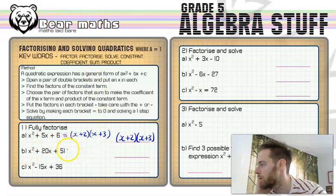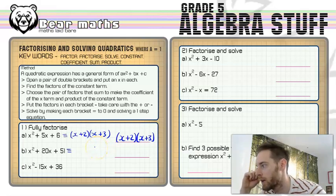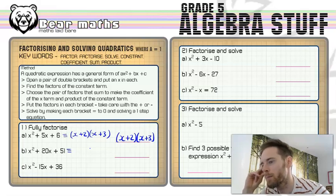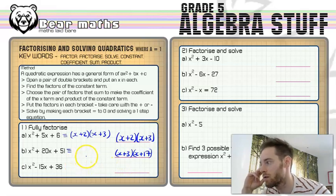Now in B, we've got this one. Factors of 51. 1 and 51. But what I happen to know is because I do play a little bit of darts, I know that triple 17 gets me 51. And I know that 3 plus 17 makes 20. So I know that actually it's the numbers 3 and 17 that will be going in my brackets. So plus 3 and plus 17. If you need to find those factors, do. If you don't, then you can just whack the numbers straight in there.